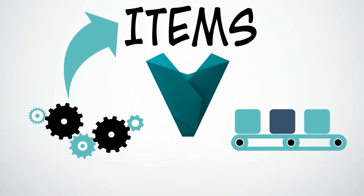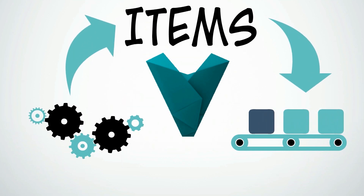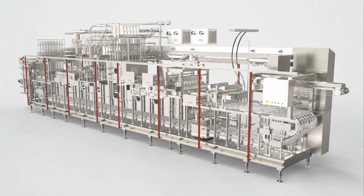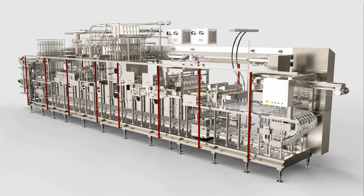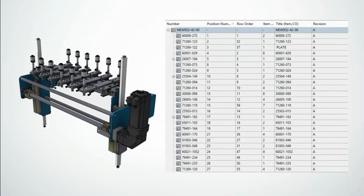Osgood needs to take their new assembly to manufacture and supply chain. They need their manufacturing BOM to effectively capture all the existing CAD data and properties. Let's begin by making the items — it's easy to do straight from the CAD model.